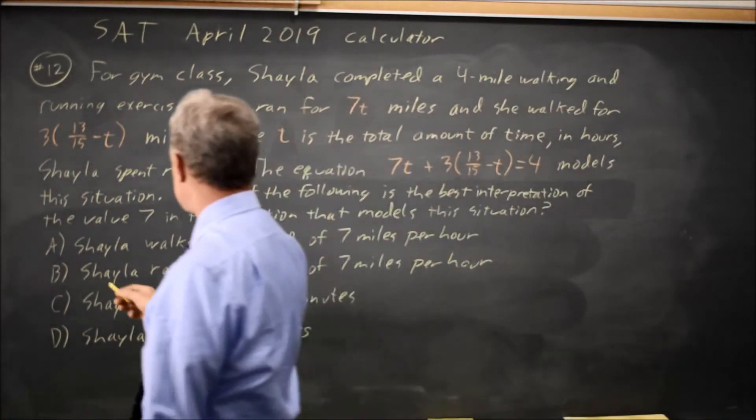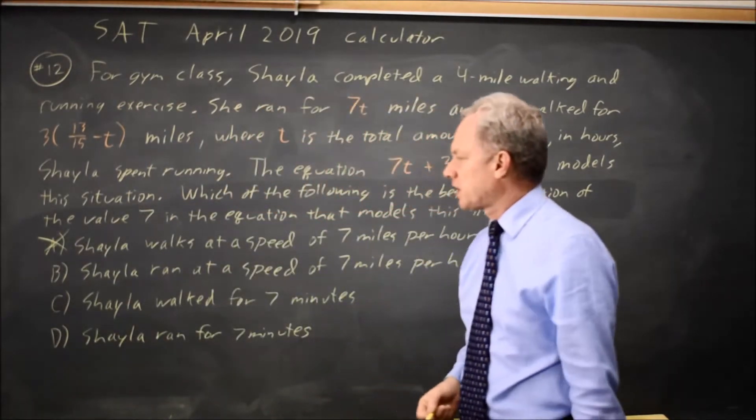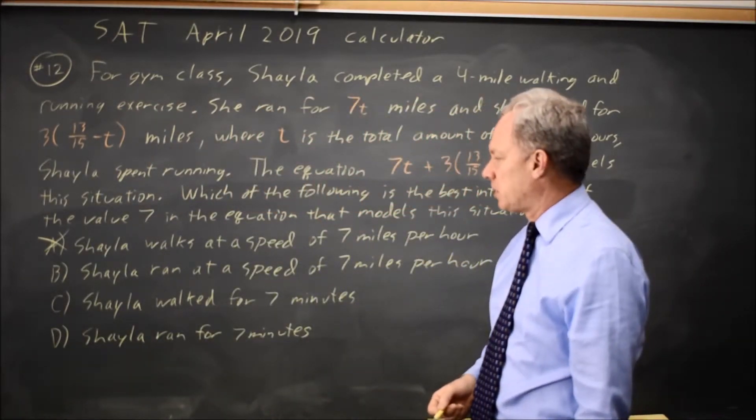Choice A, Shayla walks at a speed of 7 miles per hour, does not fit that because this is about her running, not her walking.